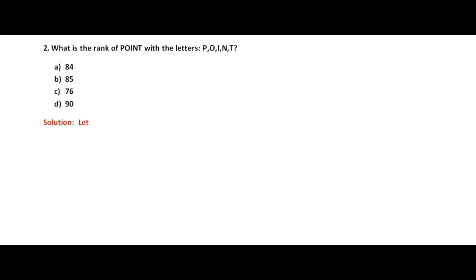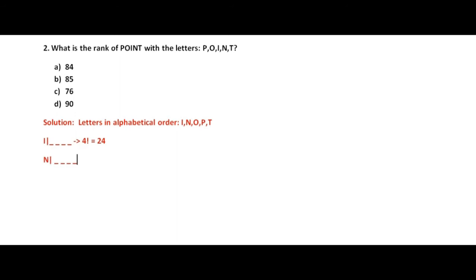Now we need to find the rank of POINT with the letters P, O, I, N, T. Let us arrange them in alphabetical order: I, N, O, P, T. Starting with the dictionary: if the first letter is I, these can be arranged in factorial 4 or 24 ways. Similarly for N, we have factorial 4 ways, which is 24.